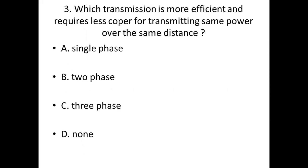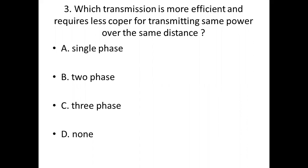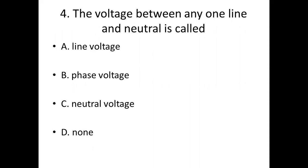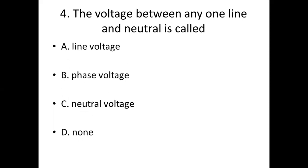Third bit. The voltage between any one line and neutral is called. Option A: Line voltage. Option B: Phase voltage. Answer: Option B. Phase voltage.